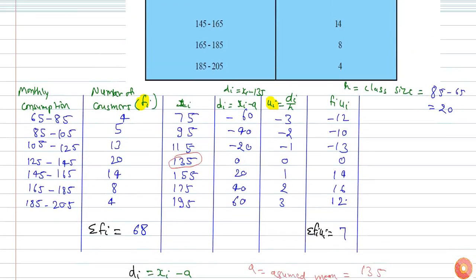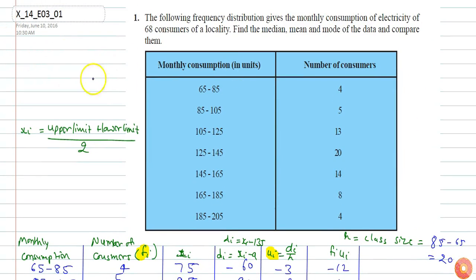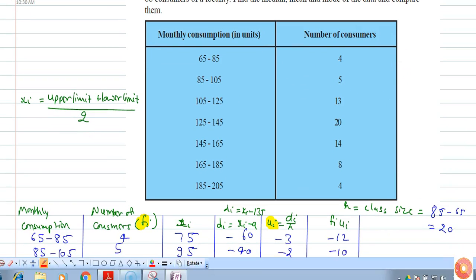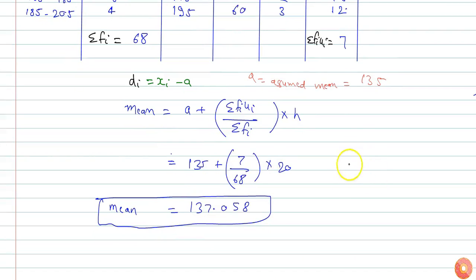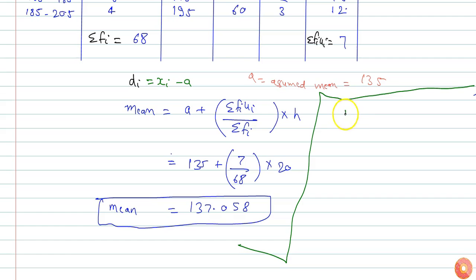Now we shall calculate the mode of the given data. Mode is given by the formula: L plus (f1 minus f0) divided by (2·f1 minus f0 minus f2), into h.